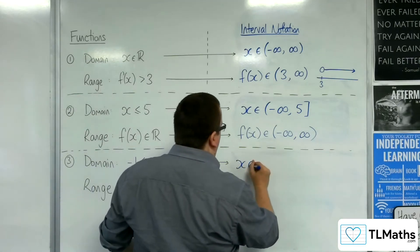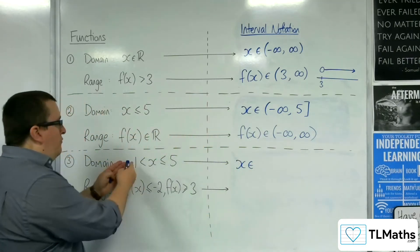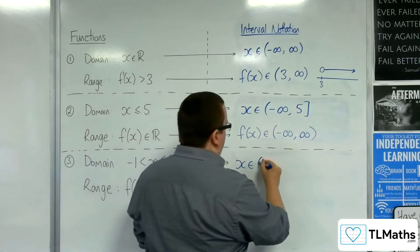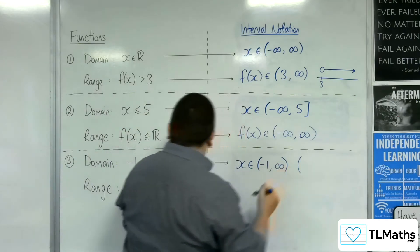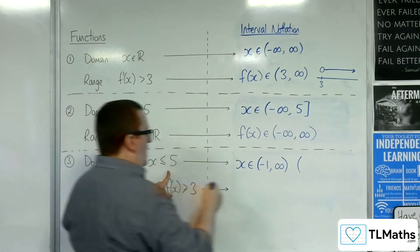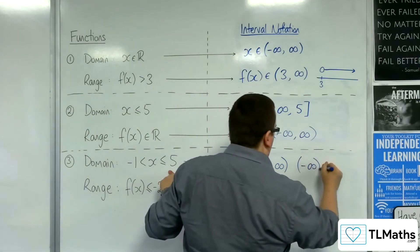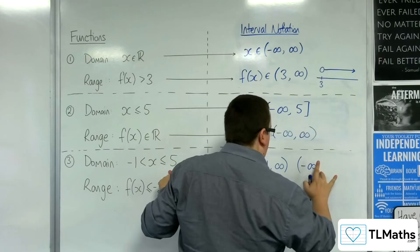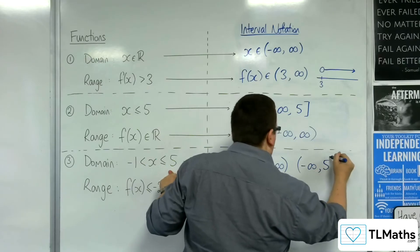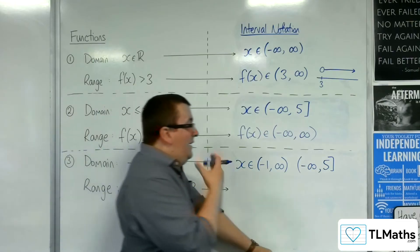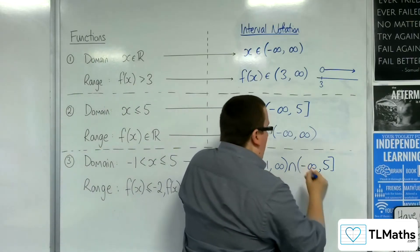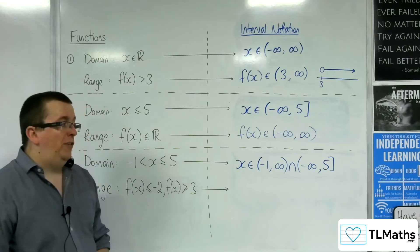Right, I'm going from minus 1 up to infinity, like that. And I've also got from negative infinity up to 5, negative infinity up to 5, included, because the equality, and I want to find out where they overlap.